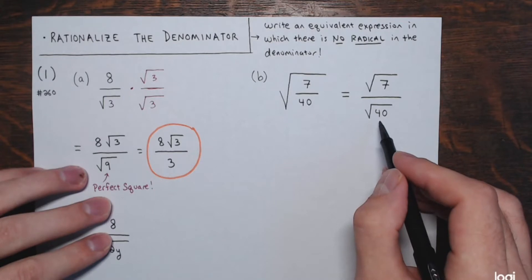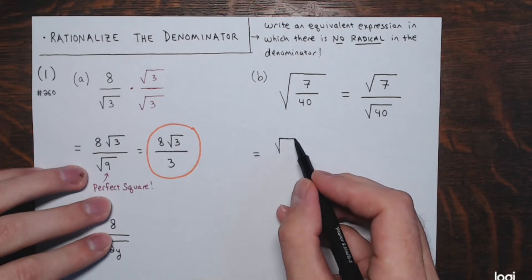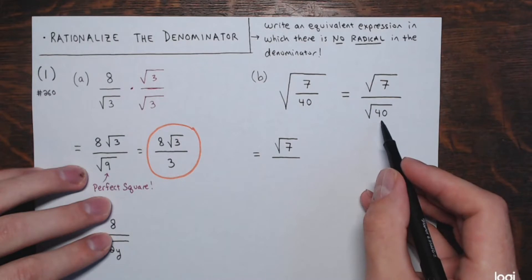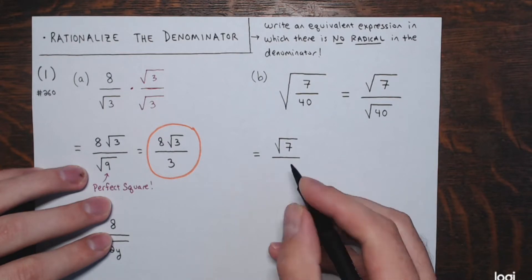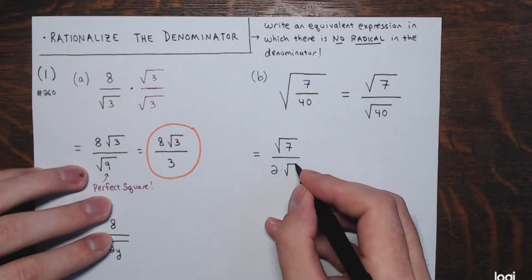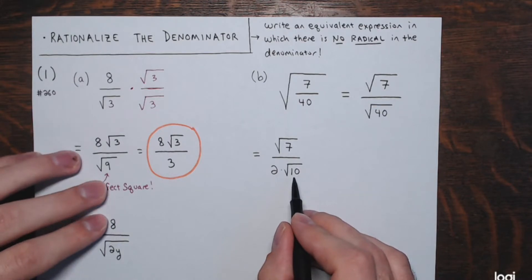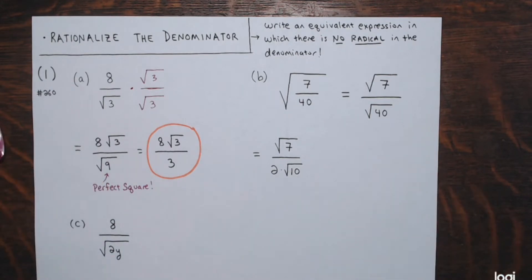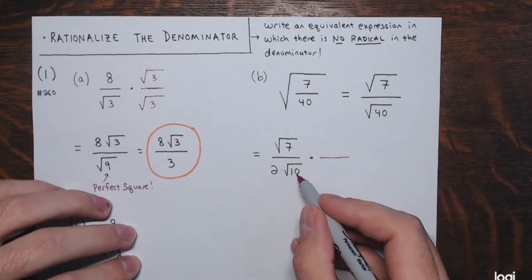This is the square root of 7 in the numerator divided by the square root of 40. The square root of 40 equals the square root of 4 times the square root of 10, which is 2 times the square root of 10. So to get rid of the radical, I only need to multiply by the square root of 10 instead of the square root of 40 — this just keeps the numbers smaller. So I'm going to multiply numerator and denominator by the square root of 10, giving the square root of 10 squared in the denominator.